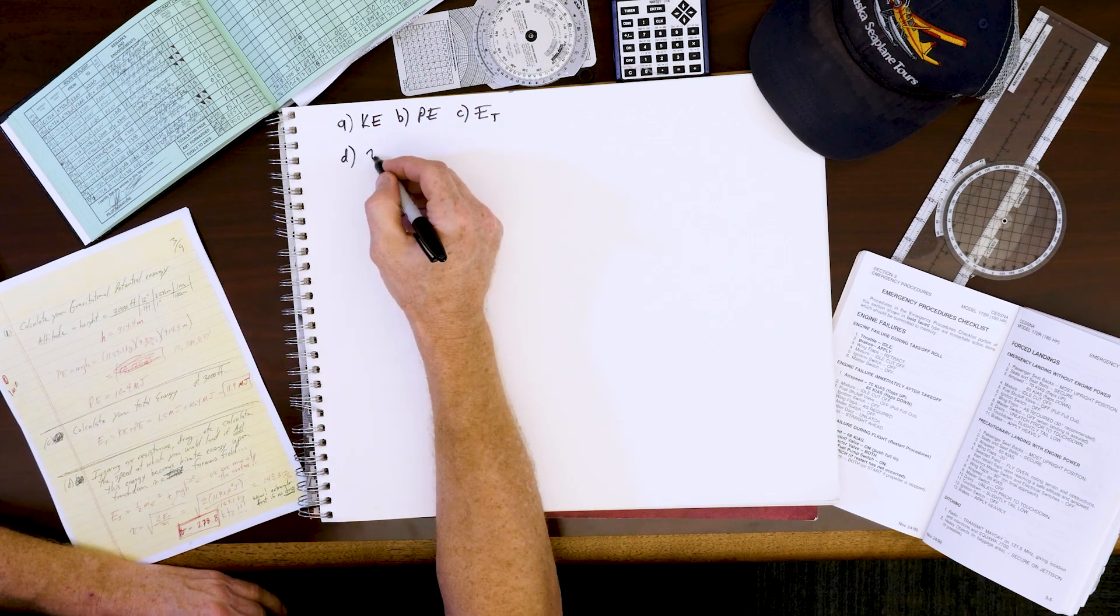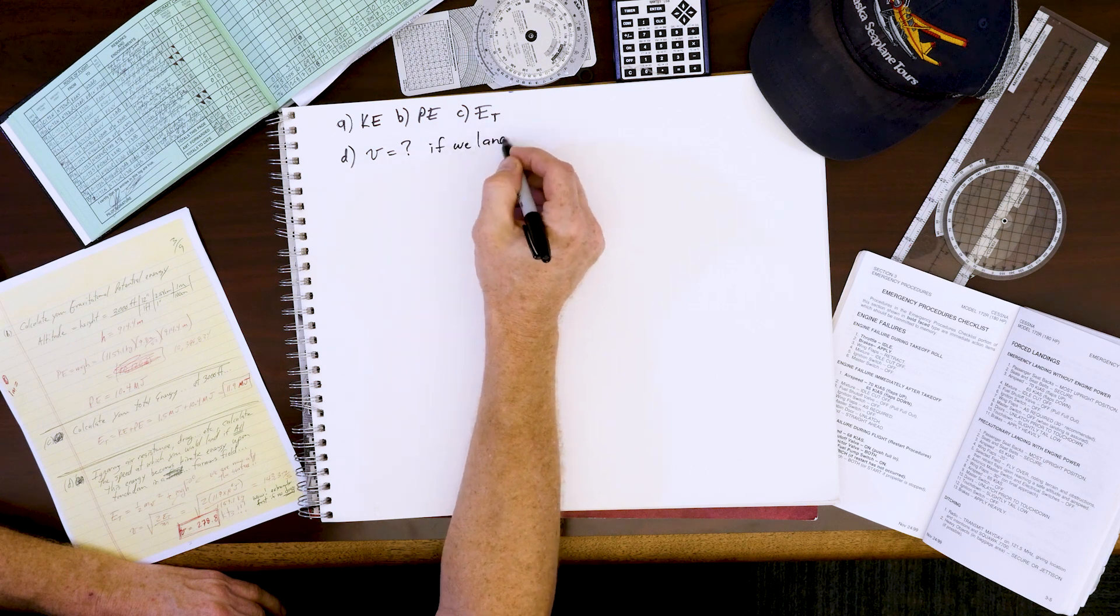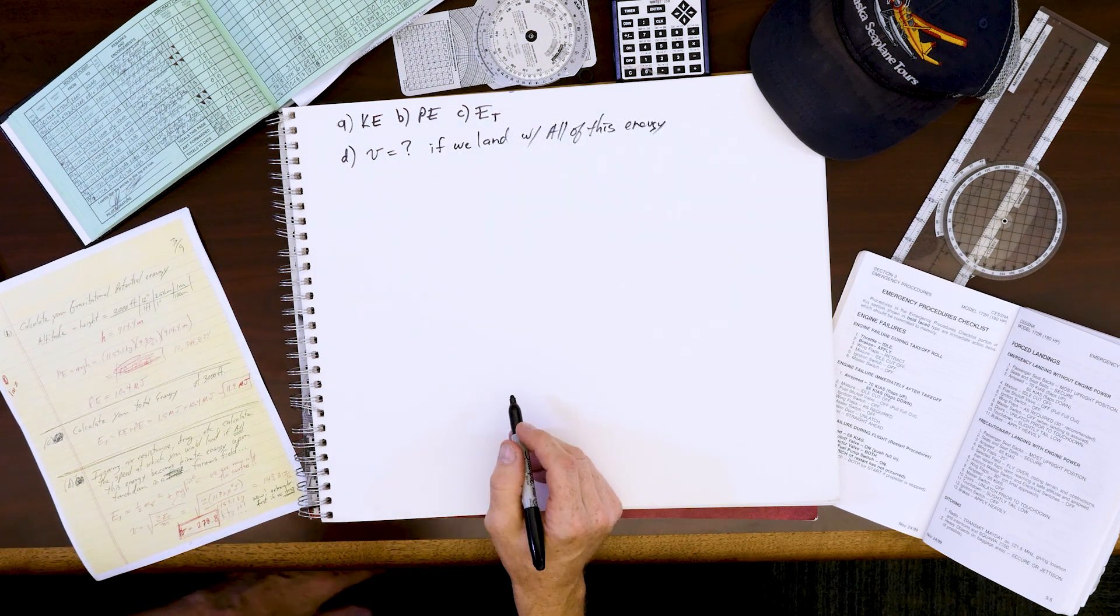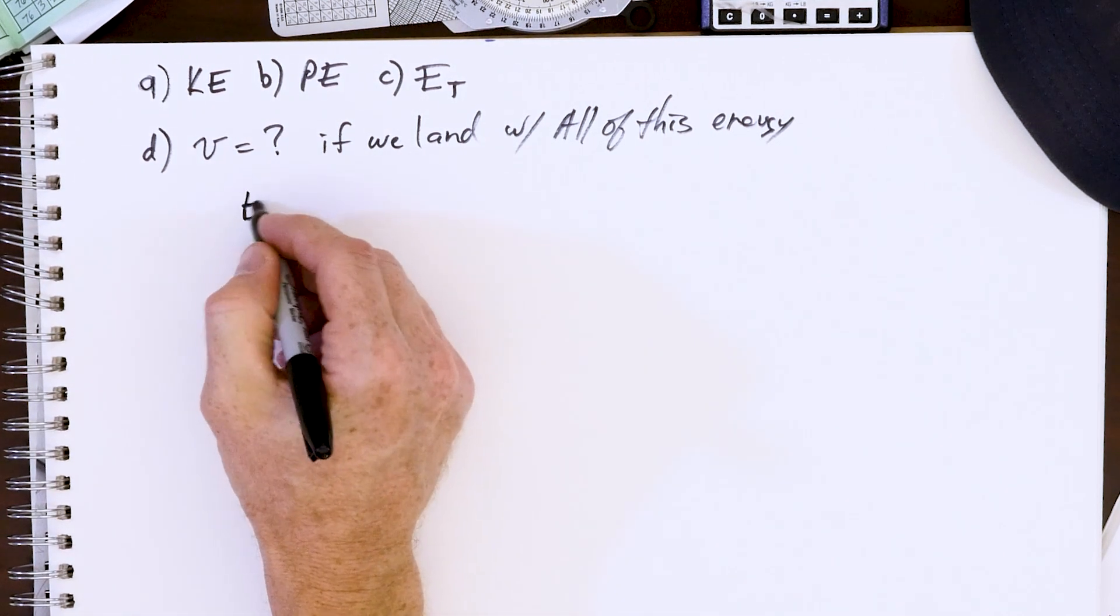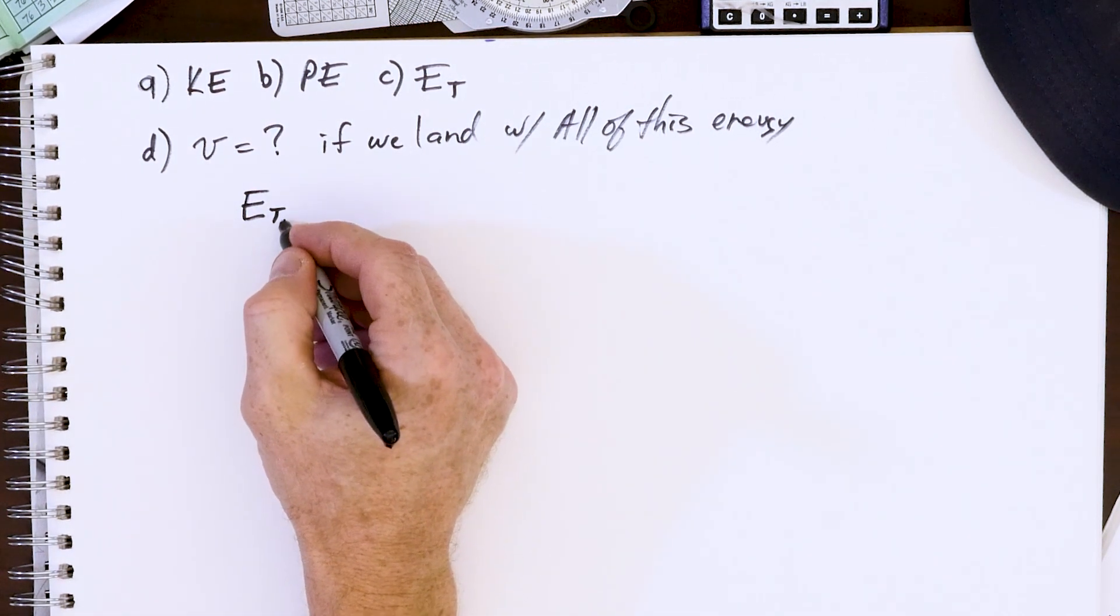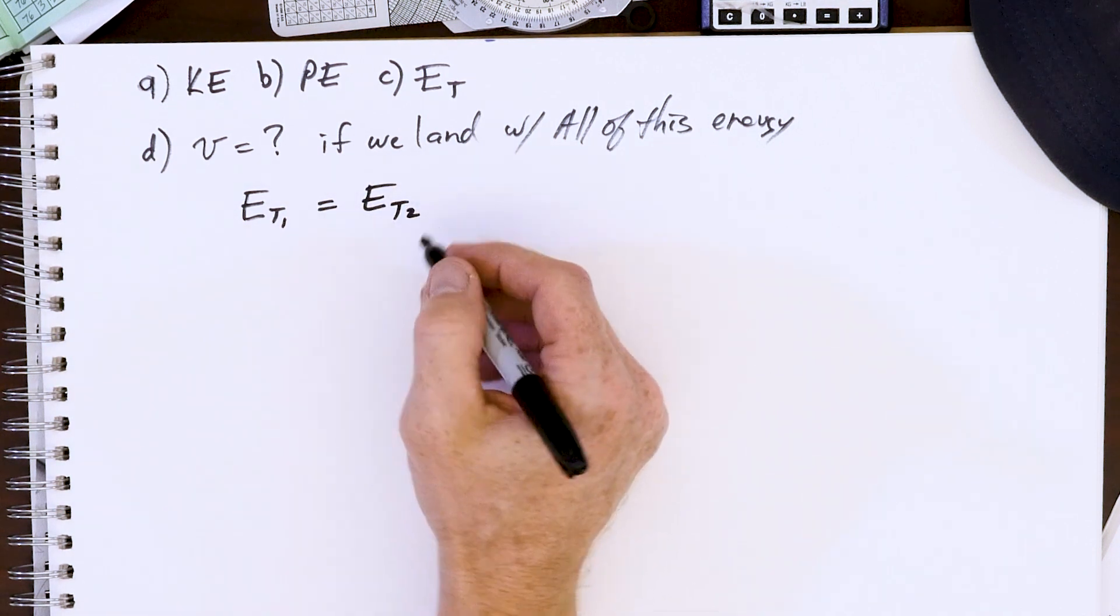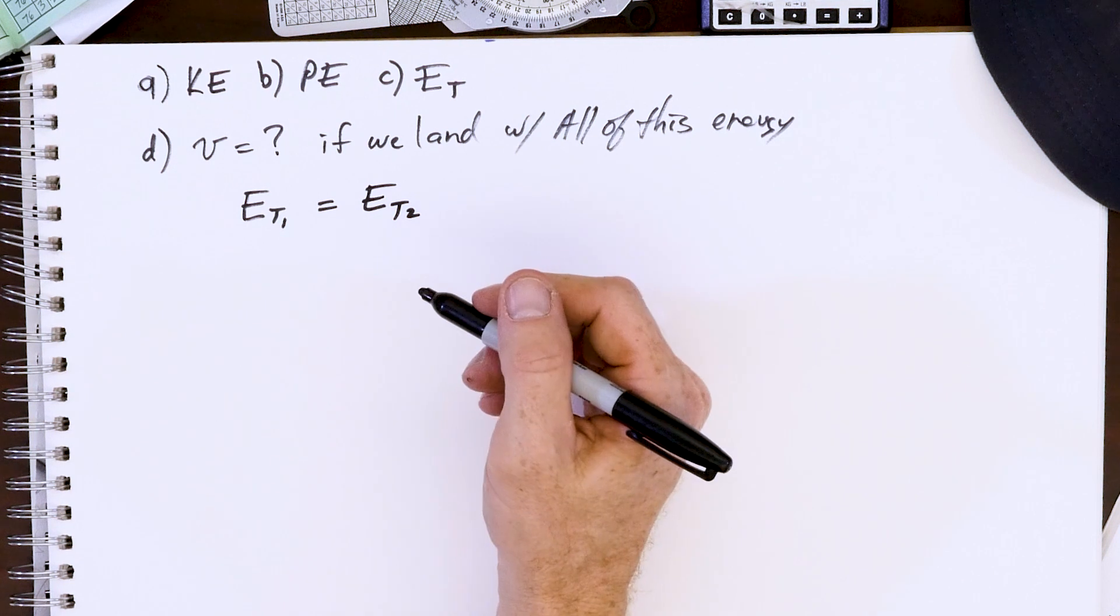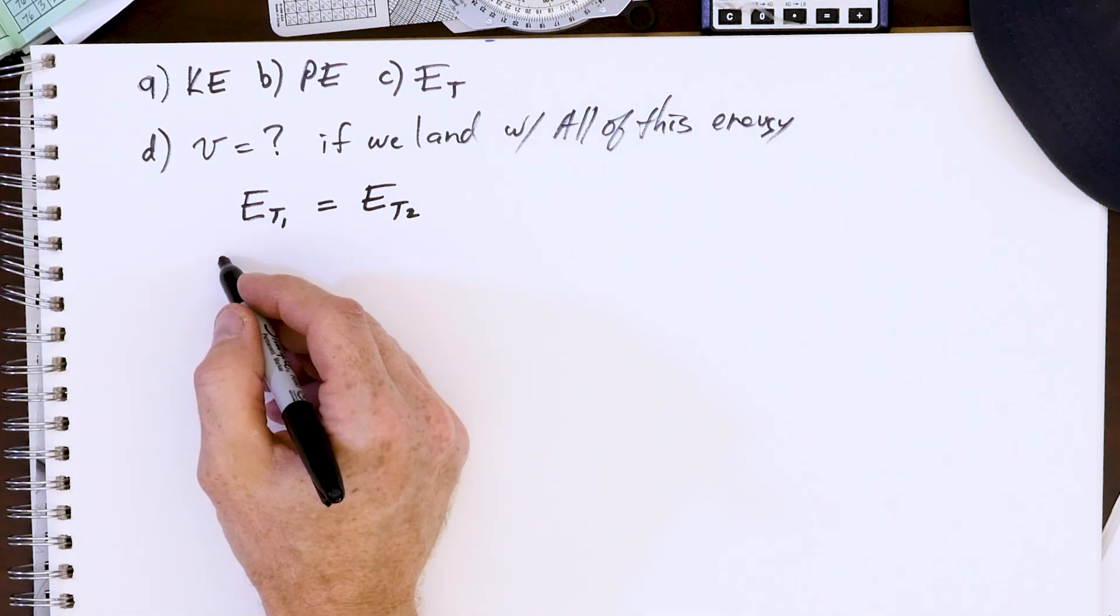We're simply going to say that the total energy that we have initially, E_T1, has got to be equal to the total energy two as we're landing. Energy is conserved, can never be created nor destroyed, just changes forms.